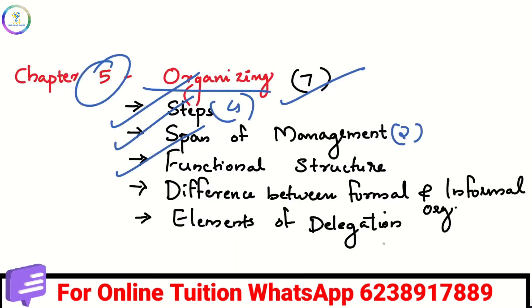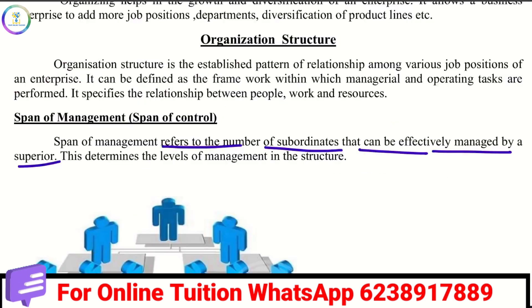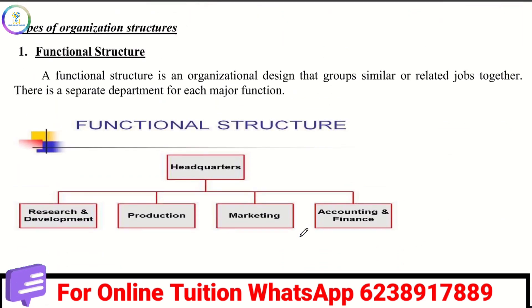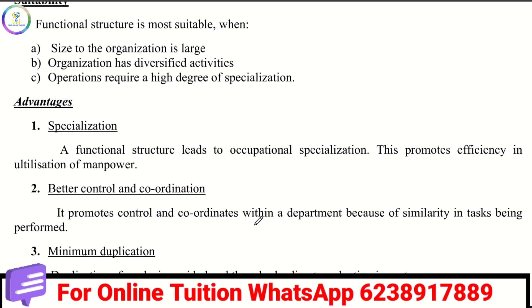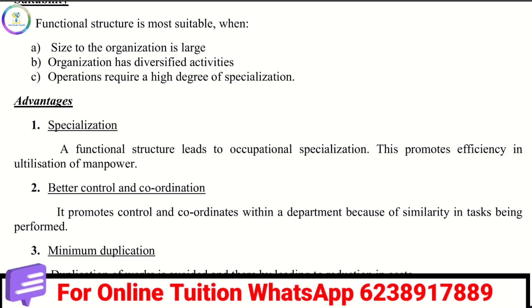Next is the functional structure, which is a type of organization structure. Organization structures are classified as functional and divisional. In a functional structure, departments are divided by function — for example, research and development, production, marketing, and finance. These are the functional departments of the organization.